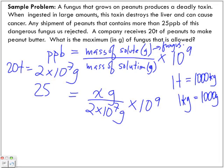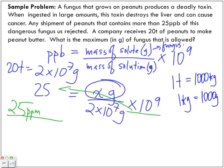So we have 2 times 10 to the power of 7 grams and we're multiplying it by 10 to the power of 9. We want to isolate for x. We're dividing by 10 to the power of 9 when we bring it over to this side of the equal sign. So we have 25 divided by 10 to the power of 9 equals x grams. Then I'm going to multiply it with 2 times 10 to the power of 7.